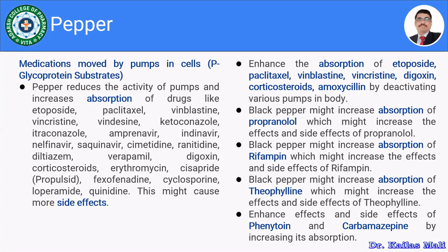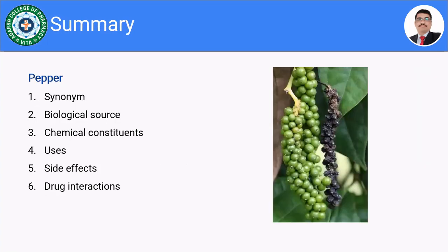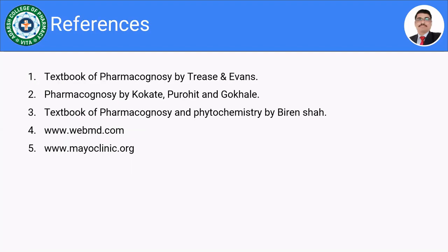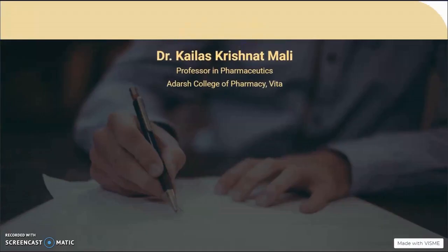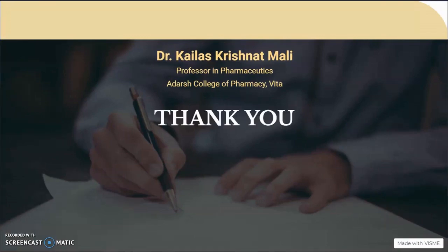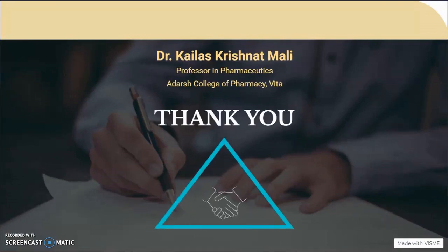These are some of the drug interactions of pepper. In short, in this session we have discussed the synonyms of pepper, biological source, chemical constituents, uses, side effects, and drug interactions of pepper. These are the references used for preparation of this presentation and slides. Thank you very much.